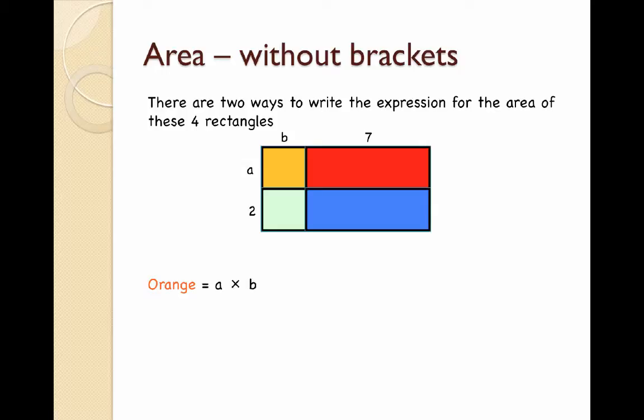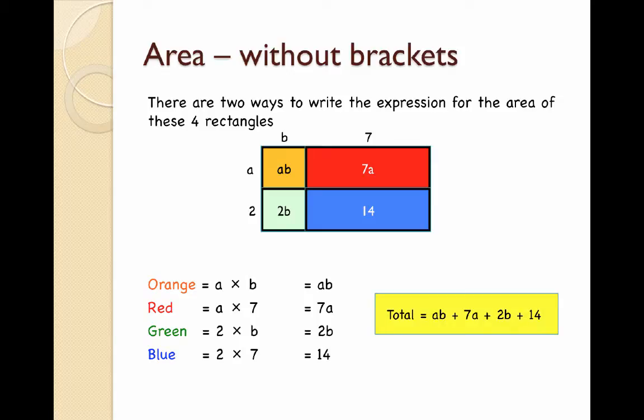For the area of the orange I've got a length and width of A times B which is AB. For the red I have A times 7 which is 7A. For the green I have 2 times B which is 2B. For the blue I have 2 times 7 which is 14. When I add them all together I get AB plus 7A plus 2B plus 14. None of them are like terms so I can't add them together. That is the expression for the area without any brackets.